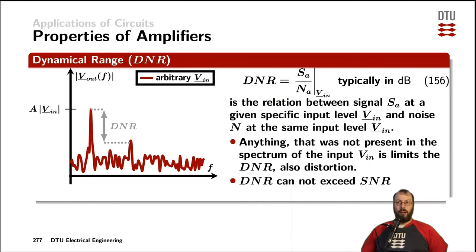Therefore, we have another parameter to represent the performance of an output amplifier with respect to its noise output, and that is called the dynamical range, or abbreviated as DNR.